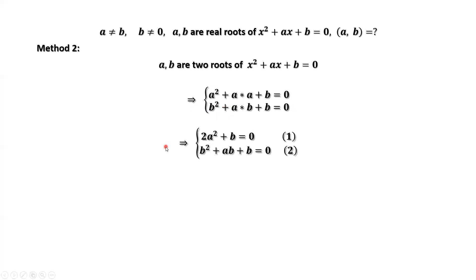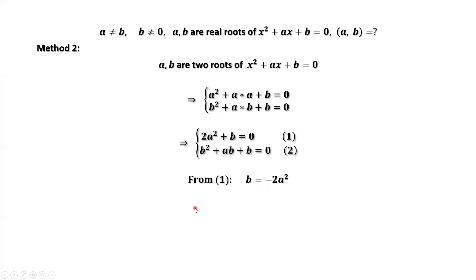Simplifying the two results, we have 2a squared plus b equals zero, and b squared plus ab plus b equals zero. From the first result, we have b equals negative 2a squared. From the second result, we factor b out to get b times (b plus a plus 1) equals zero.